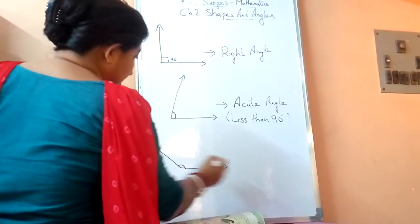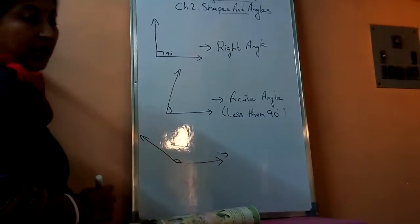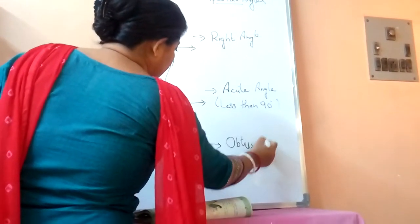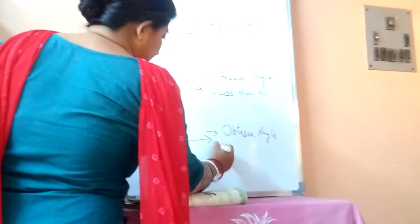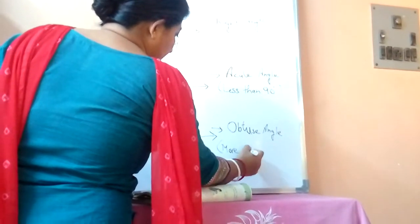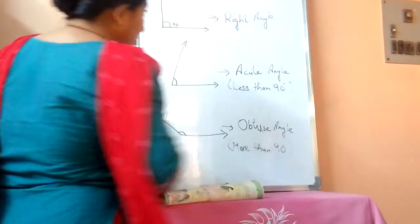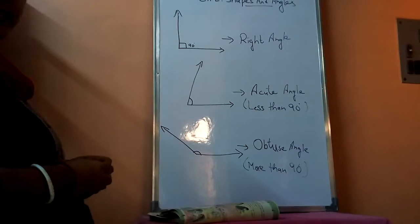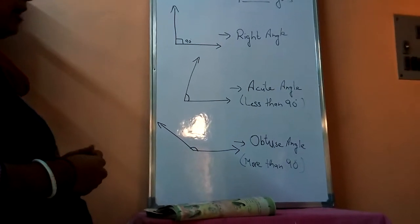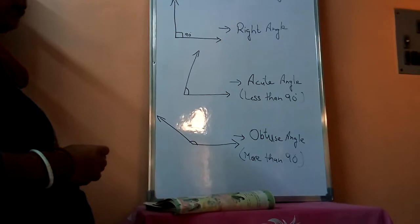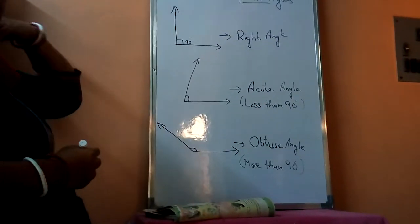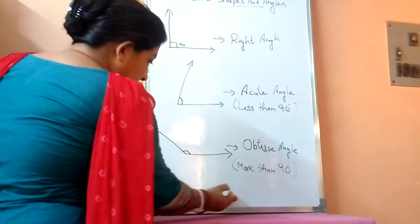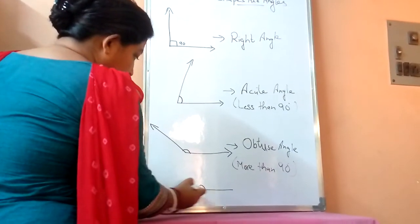These types of angles that are more than 90 degrees are called obtuse angle. That means the measurement is more than 90 degrees. And one more is 180 degrees — that is straight angle. Its measurement is 180 degrees.